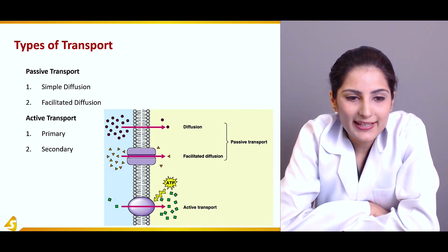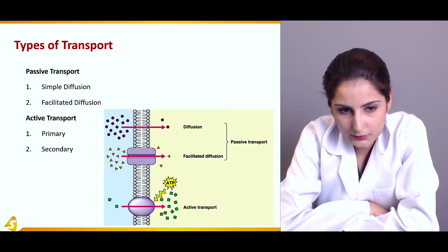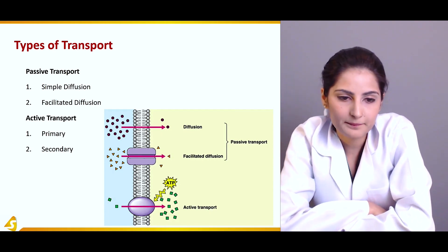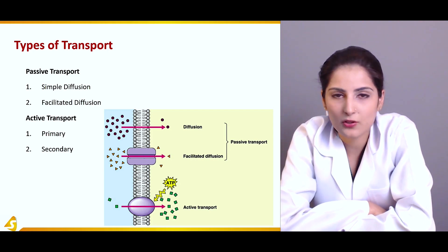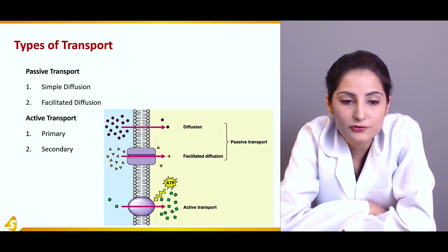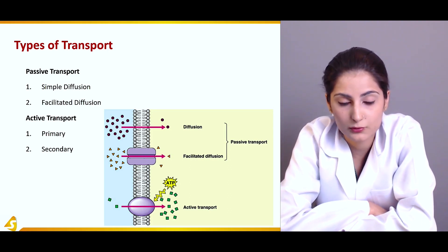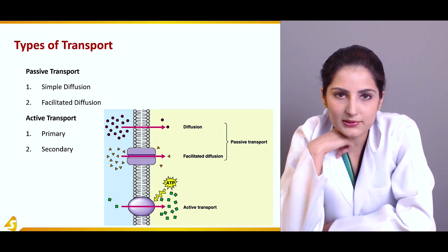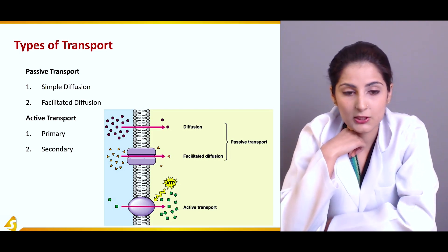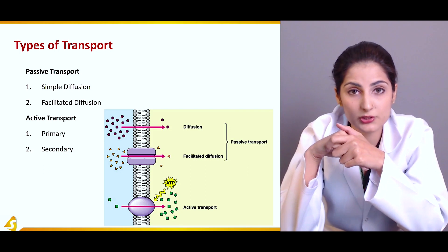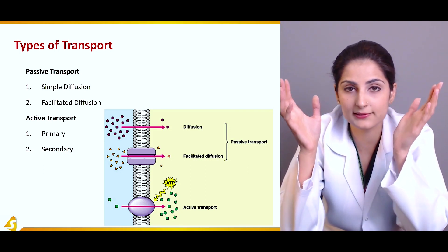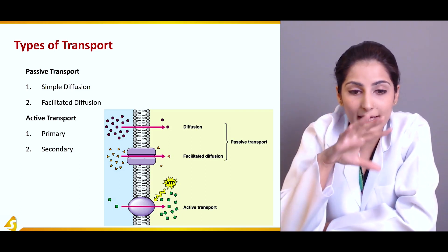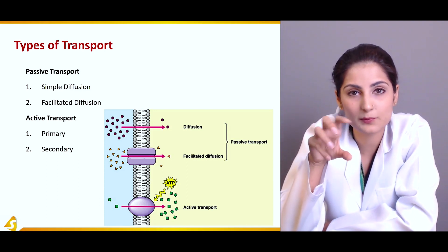If you broadly classify the types of transport, you could say it's either active or passive. Passive transport does not require energy, and active transport requires energy to function properly. Passive transport can be further divided into two types: simple diffusion or facilitated diffusion. Whenever the term diffusion comes up, it refers to passive transport; and then there is active transport, which differs in its mechanism of action.